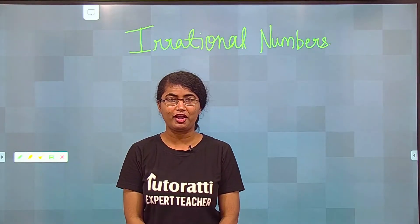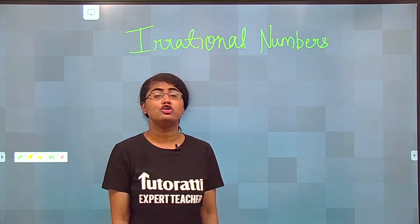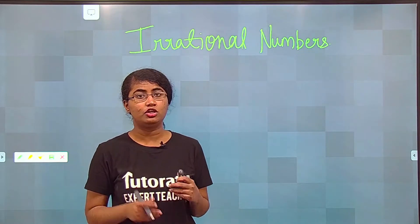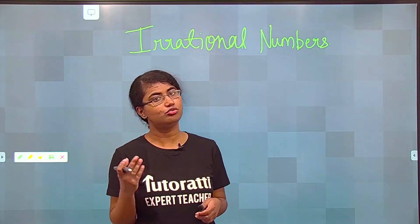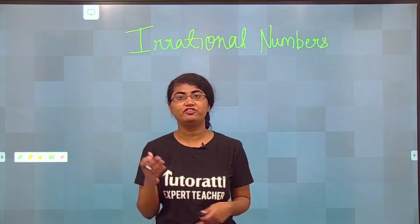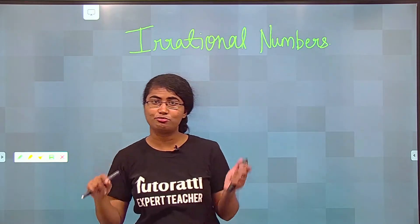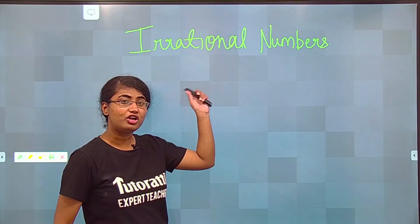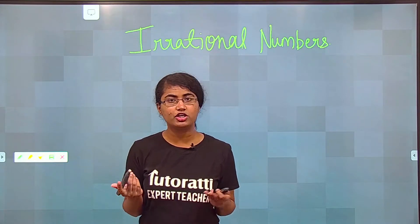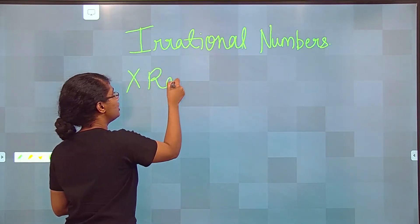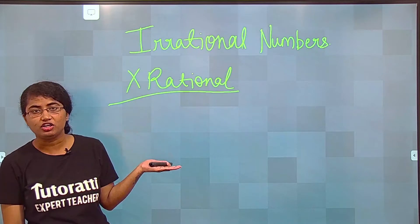Hello and welcome to Tutorati Kids. Today we are going to revisit the first lecture. Do you remember what we did in the first lecture? It was introduction to a couple of numbers — whole numbers, natural numbers, integers, rational numbers, irrational numbers, and real numbers. Do you all remember irrational numbers? The easiest way to remember what an irrational number is: it is not a rational number. Yes, it is to say that it is not a rational number.